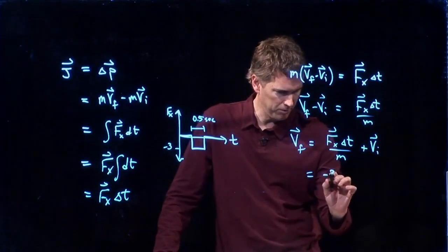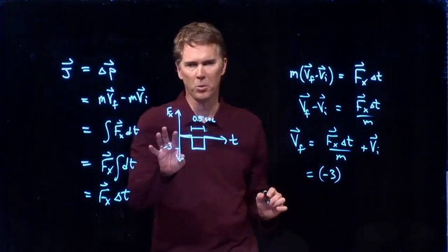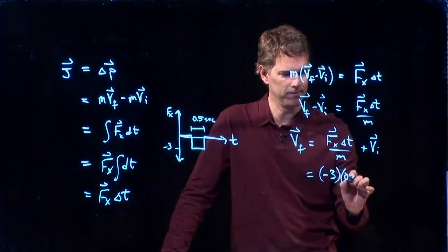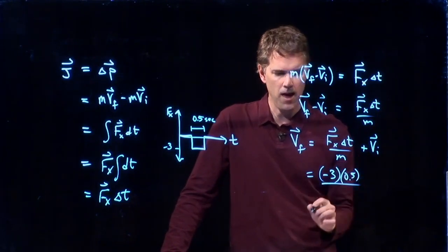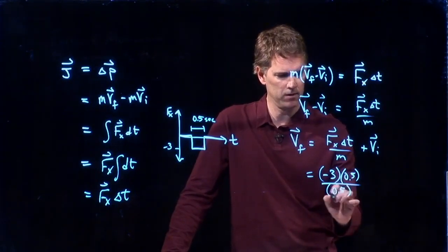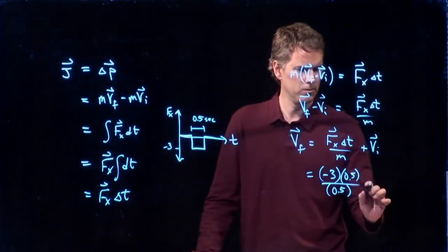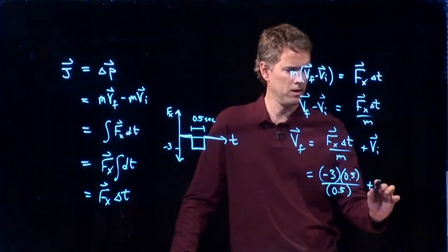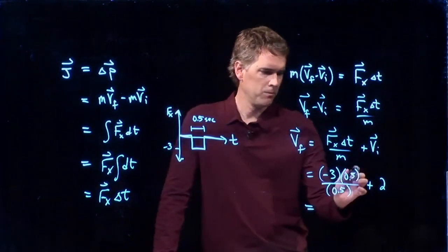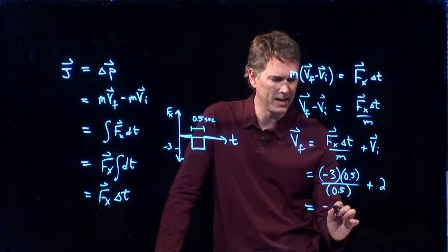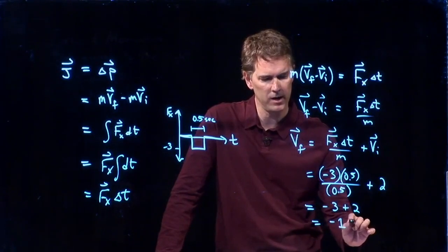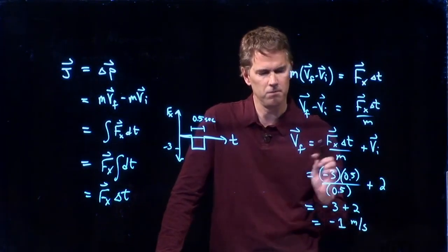F sub X is negative three in that region. Presumably that would be newtons. Delta T, we said, was a half a second. M, we said, was a half a kilogram. VI was two meters per second. And so look what we get. We get 0.5's cancel out. We get minus three plus two, which is minus one meter per second.